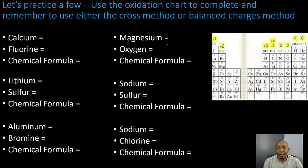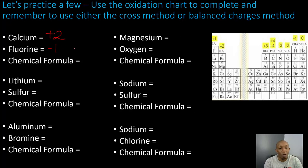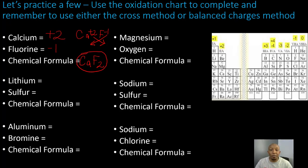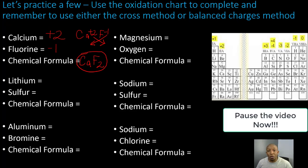Calcium has a plus 2 charge from its group, and fluorine has a negative 1 charge. Since the charges don't cancel, we use the cross method: calcium's plus 2 becomes the subscript for fluorine, giving us CaF2. Remember, you don't put the charges in the subscripts. Go ahead and take about two minutes to complete the following problems, then pause the video.